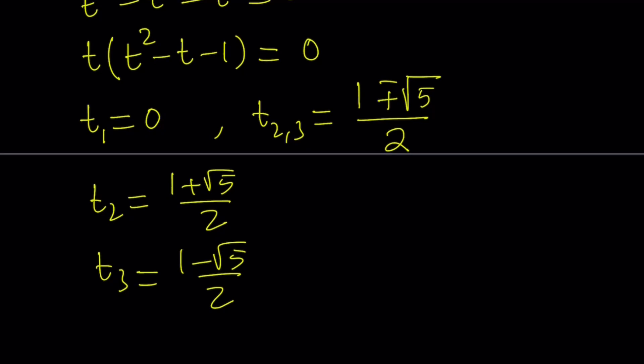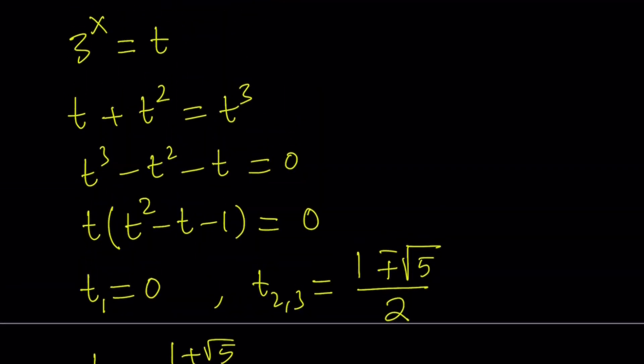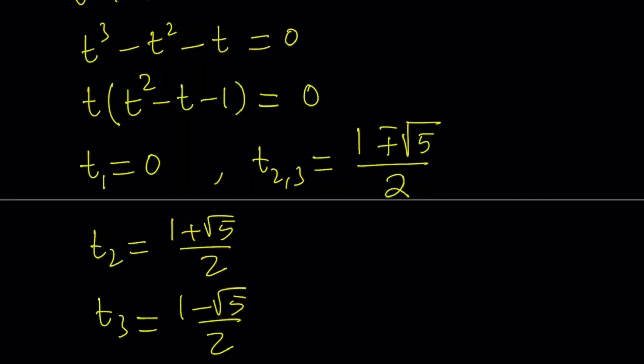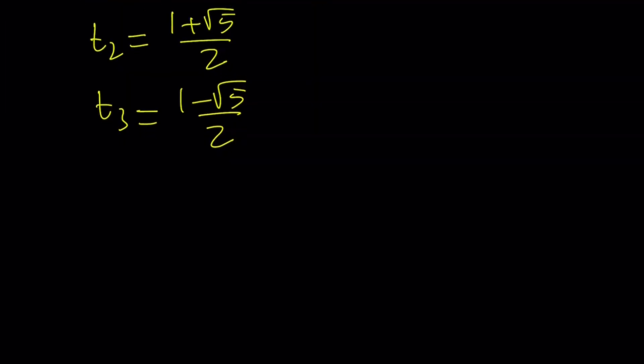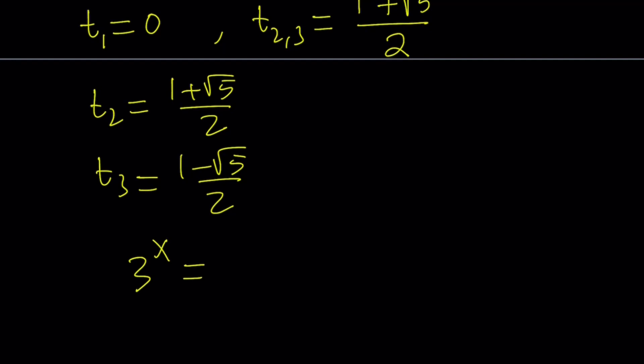But this is just a dummy variable. We just used it to substitute our expression. So 3 to the power x is equal to t and now we need to back substitute. Let's replace t with 3 to the power x in each case. Let's take the first one. 3 to the power x equals 0. Now does this equation have any solutions? 3 to the power anything is basically positive right? It can't be 0. There's no way. Unless x is negative infinity but negative infinity is not a number so we're not going to get any real solutions from here. Are there any complex solutions? Something to think about. But we don't get any real solutions for sure. So this doesn't give us anything.